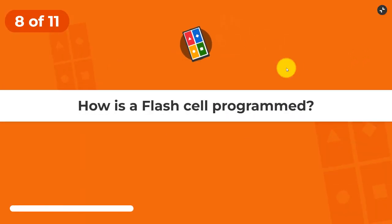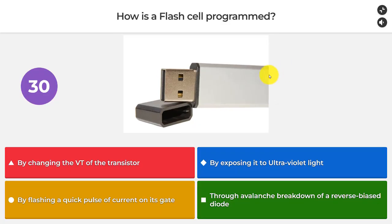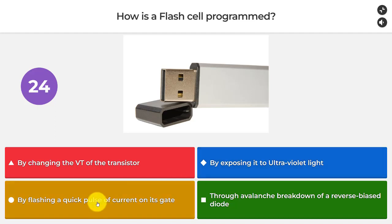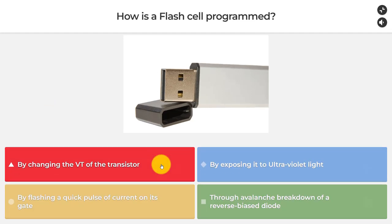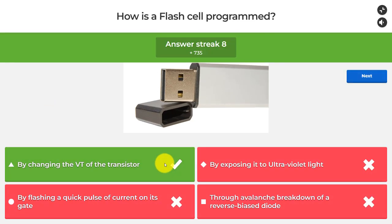Question number eight: how is a flash cell programmed? By changing the VT of the transistor, by exposing it to ultraviolet light, by flashing a pulse of current on its gate, or through avalanche breakdown of a reverse-biased diode? The answer is by changing the VT of the transistor.